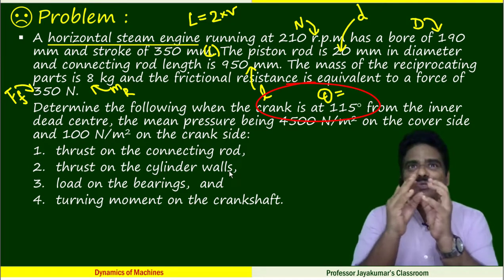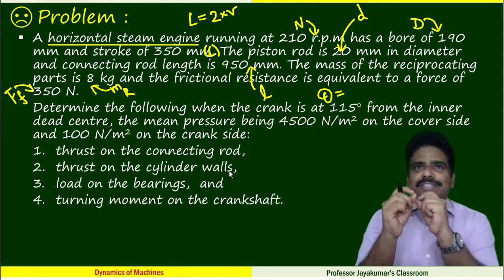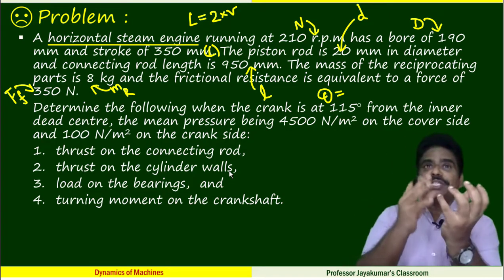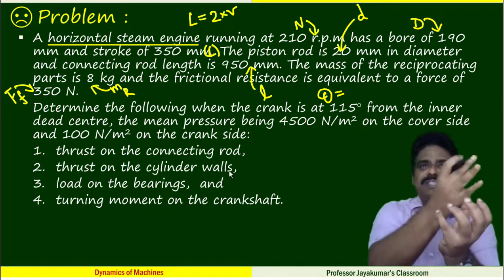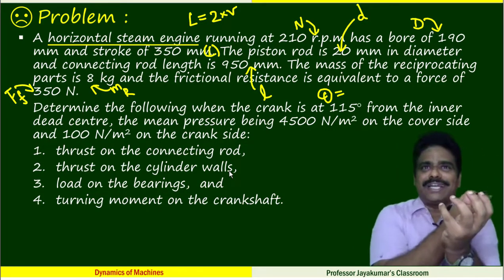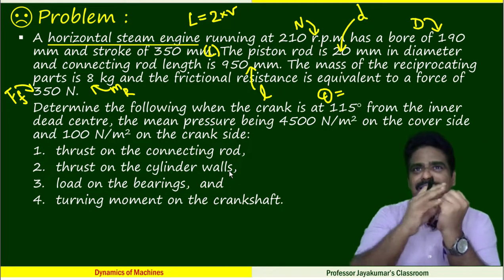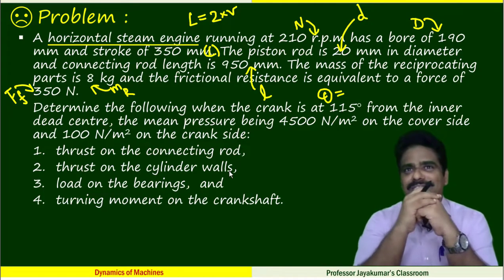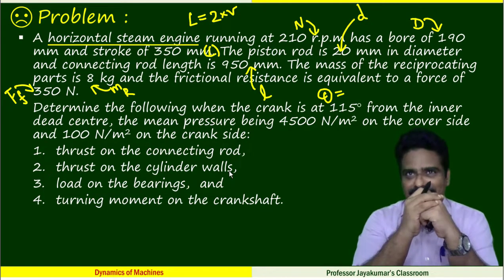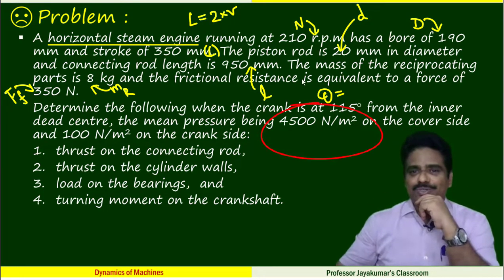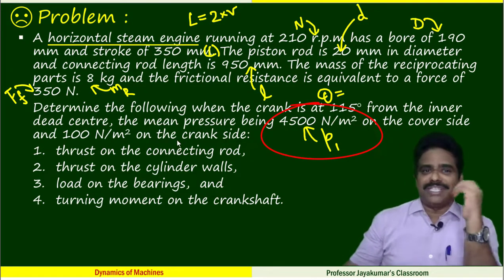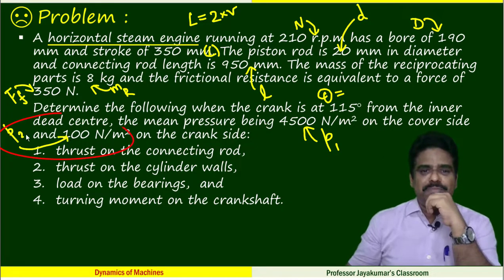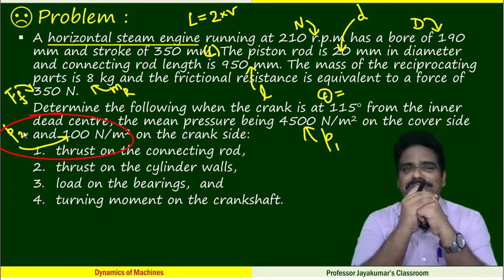They are given pressure on both sides of the piston. Towards the cylinder head, we call it cover side. The side towards crank is known as crank side pressure. I use the notation P1 for the pressure on the cover side, then P2 for crank side pressure.